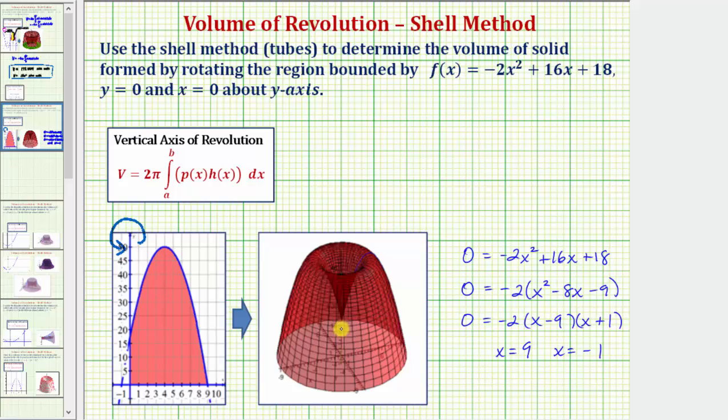And now we're told to find the volume of revolution using the shell method, which is the best choice because we have a function of x and a vertical axis of rotation. So to find the volume we'll be using this formula here, where the volume equals 2 pi times the integral from a to b of rho of x times h of x dx. Where rho of x is the radius function and h of x is the height function.